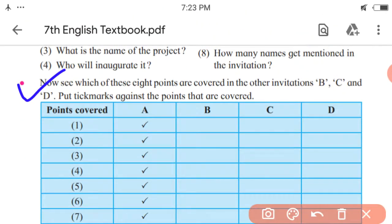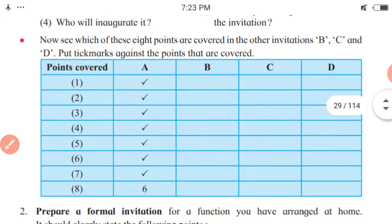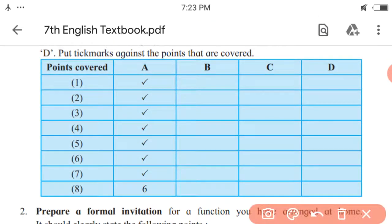And now see which of these eight points are covered in the other invitations B, C and D. So all the activities for column A have been done. What is the first question? That is about who is sending or giving the invitation? So that information is given in invitation A. So here, right mark is kept. Second question. What is the program? Its name is given in the invitation A. So it is right mark over here. So in this way, all the eight points are covered in invitation A. The same way the information is filled up in the column A.